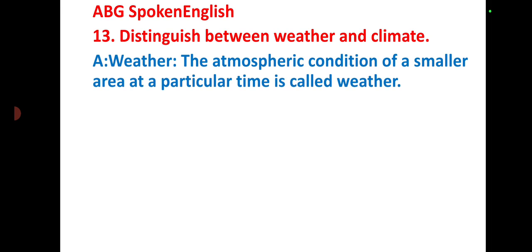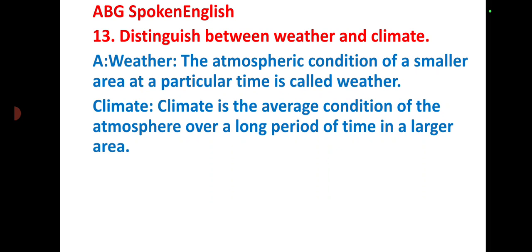Distinguish between weather and climate. Weather: the atmospheric condition of a smaller area at a particular time is called weather. Climate: climate is the average condition of the atmosphere over a long period of time in a large area.